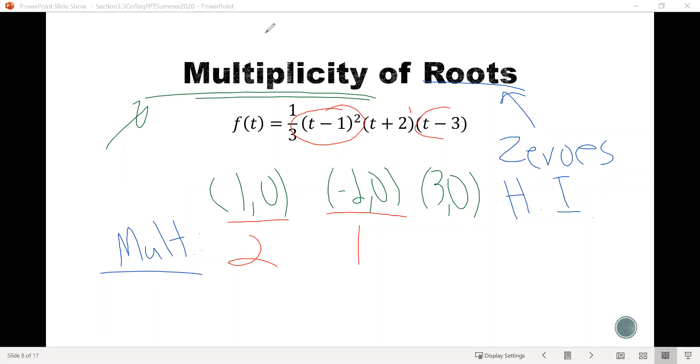And then similarly for the t minus 3 factor, again, no power, so we can assume it's a 1. So we know the multiplicity of that 0 is 1 as well. All right, so that's identifying multiplicity of roots, but your next question would be, Cody, why would we care about that? Well, let me explain to you why.